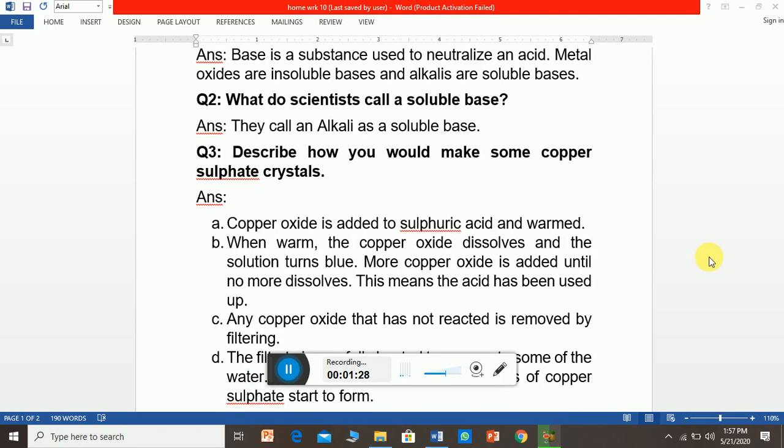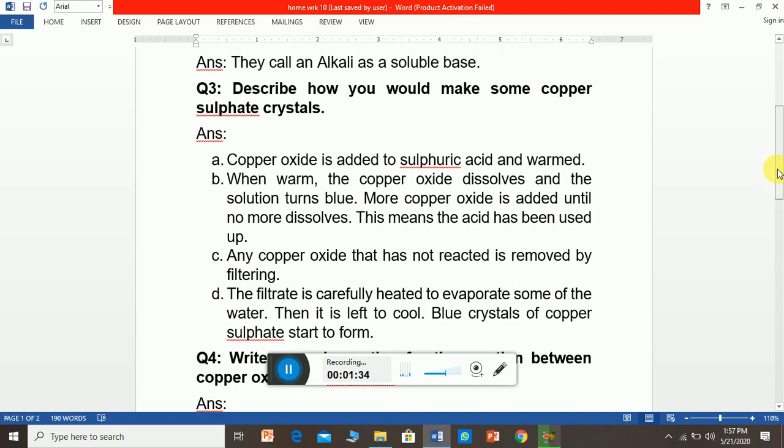Now the third question: Describe how you would make copper sulfate crystals. We already discussed the method in the previous lecture with images. First, we add copper oxide with sulfuric acid in the beaker and provide a small amount of heat to warm the solution.